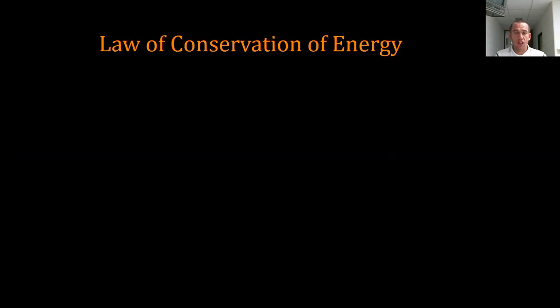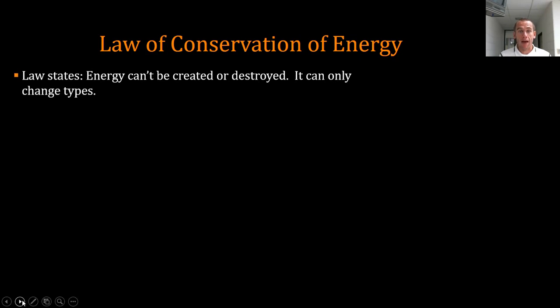The last thing we want to look at is the law of conservation of energy. Now, this is a big deal. A conservation law says that things can't be created or destroyed. We always start and end with the same amount. And so the law of conservation of energy says that energy cannot be created or destroyed. However, it can change types.